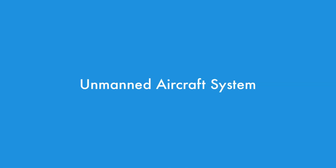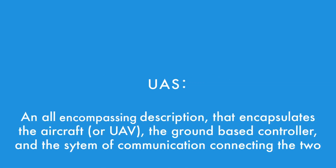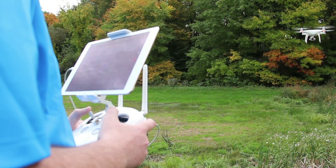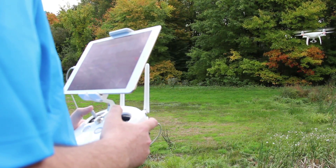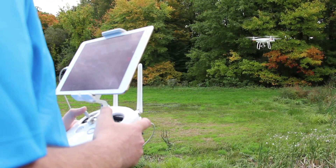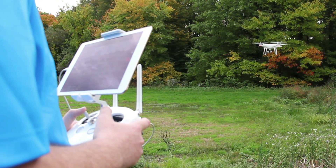An unmanned aircraft system, or UAS for short, is an all-encompassing description that encapsulates the aircraft, or UAV, the ground-based controller, and the system of communications connecting the two. My Phantom, the controller, the software, my cell phone, and the wire connecting them make up the UAS.